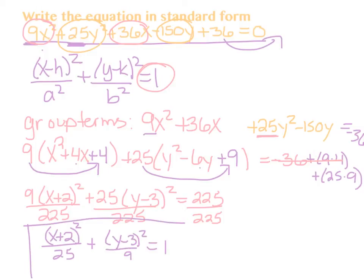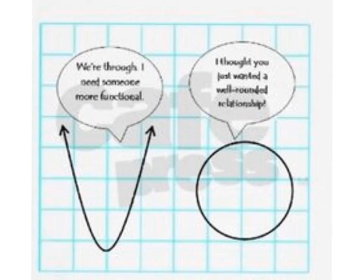Now we can see that 25 is bigger, so it's a horizontal ellipse rather than a vertical one. Sorry guys, I know it's blurry, but this was the best conic joke I could find. We're done with this video — you guys have a good night.